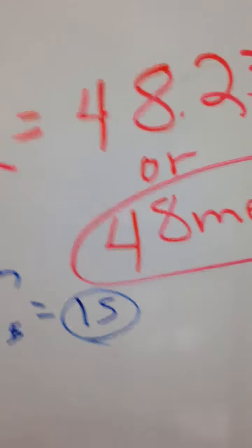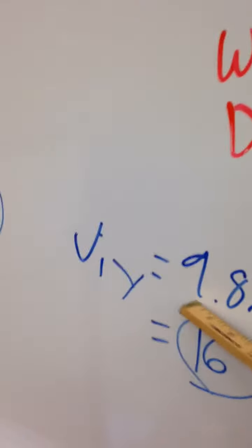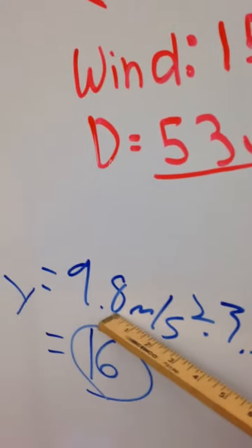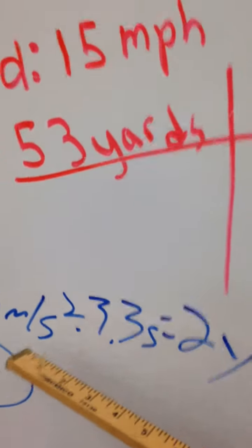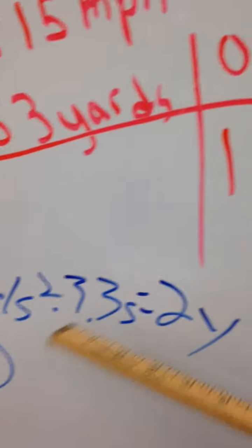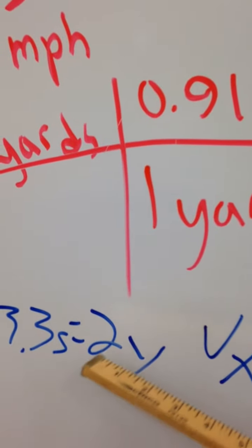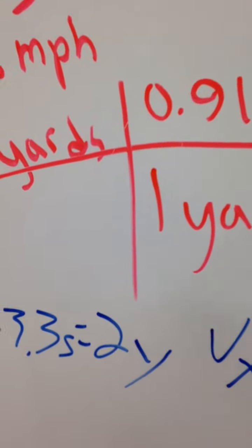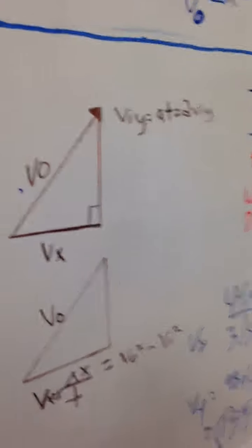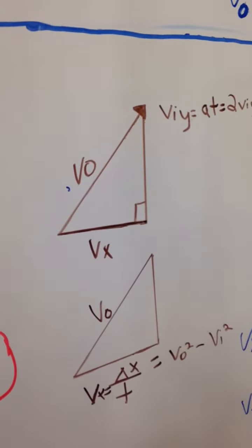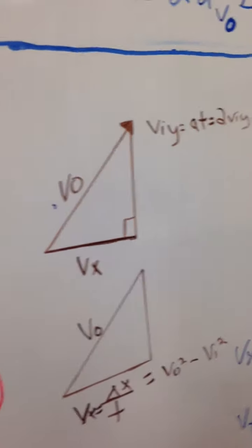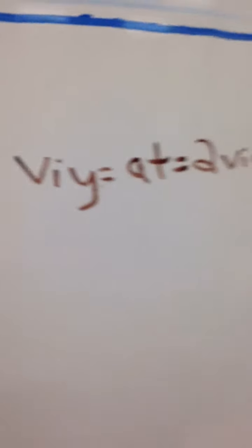For the Y component, acceleration due to gravity times time equals 2Y, Y being acceleration in the Y component of the velocity. And we came up with 16.